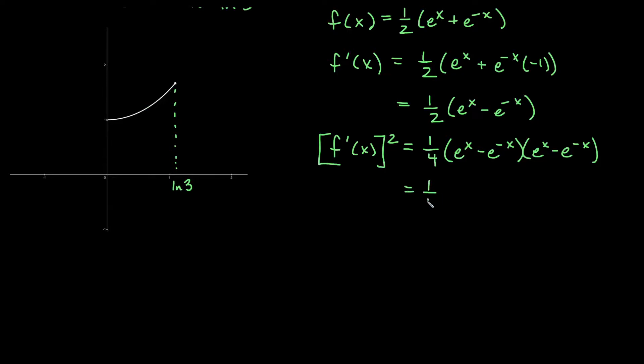So here we have one-fourth. If I take e to the x times e to the x, I add those exponents. So x plus x gives me 2x e to the 2x. Now if I do the outside terms, I would get e to the x times negative e to the minus x. So first thing, positive times negative is negative. x plus negative x would be 0. So this is really e to the 0.